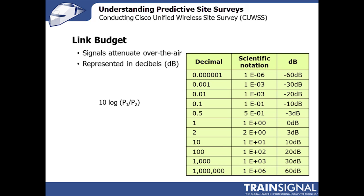Decibels use a log representation, and here's why. Let's say your access point transmits at 100 milliwatts. By the time that signal gets to the receiver on your laptop or IP phone, it's actually going to receive something like 10 to the minus 10 milliwatts. The difference between transmitting at 100 milliwatts and receiving at 10 to the minus 10 milliwatts is a tremendous ratio, so to represent those large numbers we take the log of the differences in power — that's simply all a decibel is.